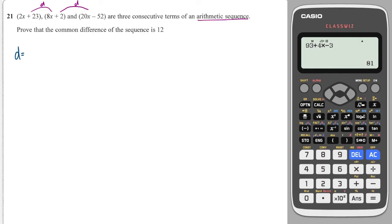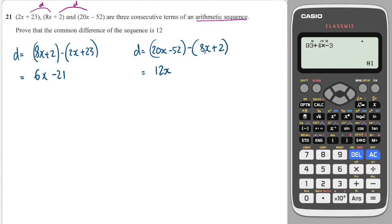So I can first write that d is equal to 8x plus 2 minus the term before it, because that's how you'd work out the difference. You'd take the larger term and then subtract the second term. So if I take the third term and subtract it from the second term, I should also get the difference. So let's simplify these. This is going to give me 6x, 2 minus 23 is minus 21. And over here, 12x and then minus 54. Okay, great.